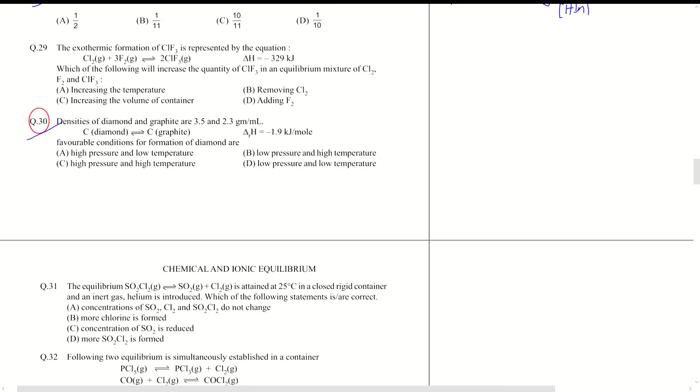In question 30, density of diamond and graphite are given. So this is an exothermic reaction with a negative value of delta H. And as you can see, diamond is more dense, so it's a more compact form.